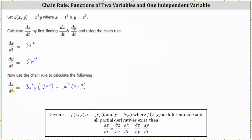Now we're not done here. We're looking for dz dt, which means we want to express the derivative in terms of t, not x, y, and t. So now we'll substitute t cubed for x, and t to the fifth for y.